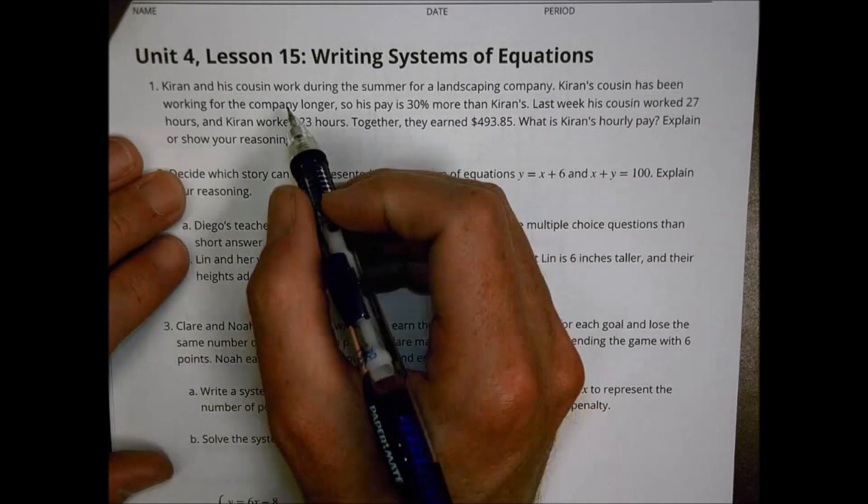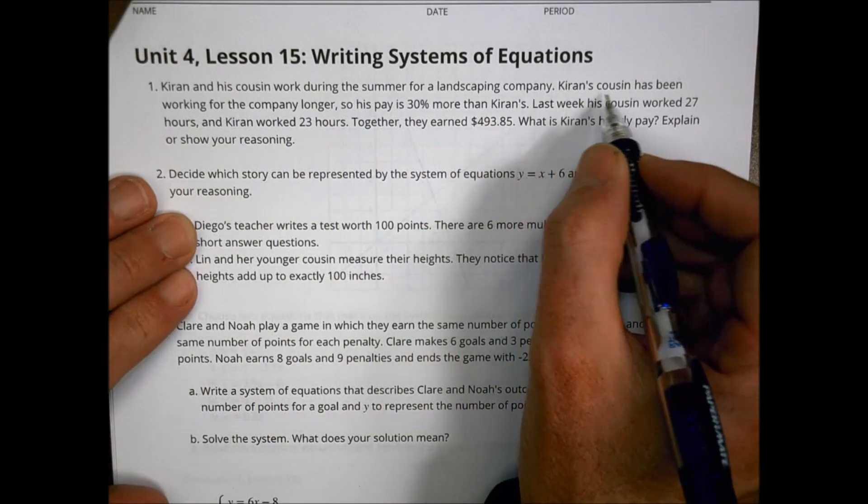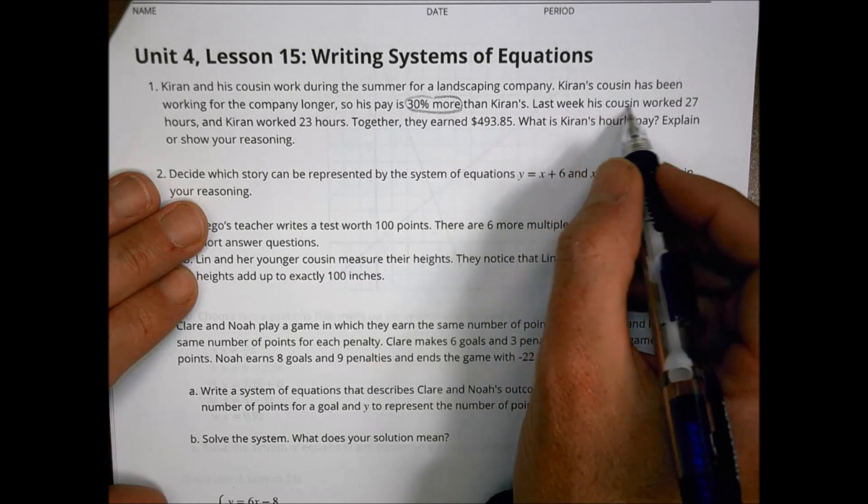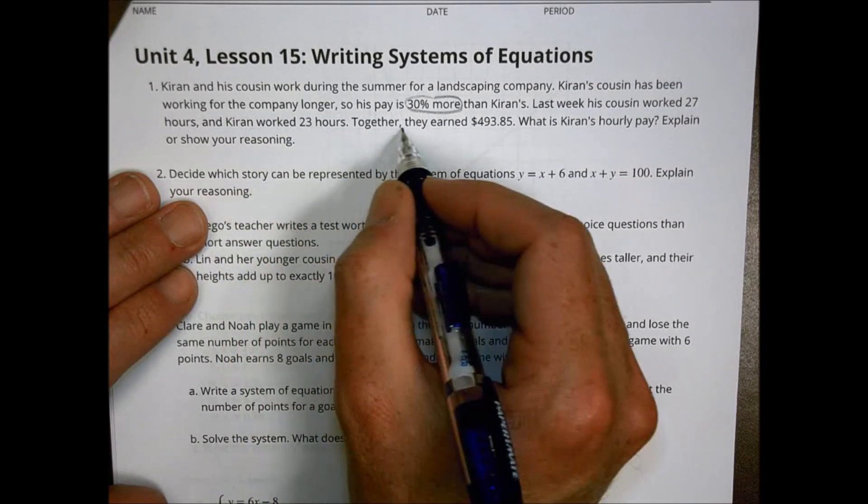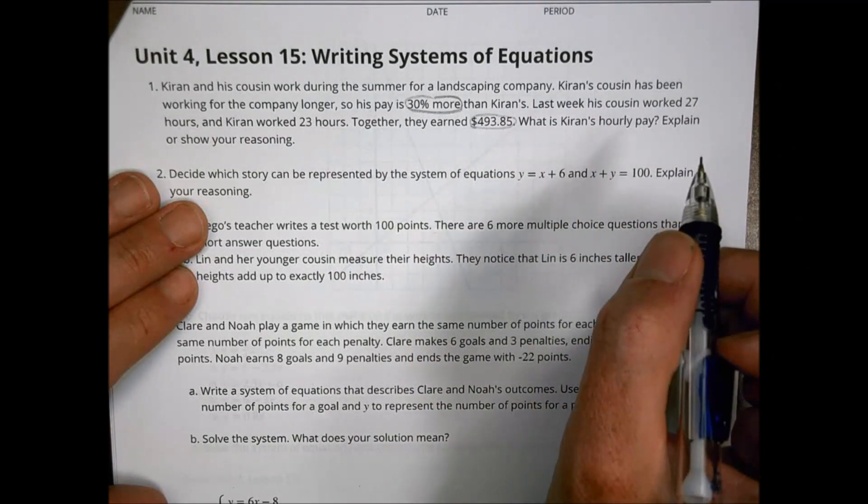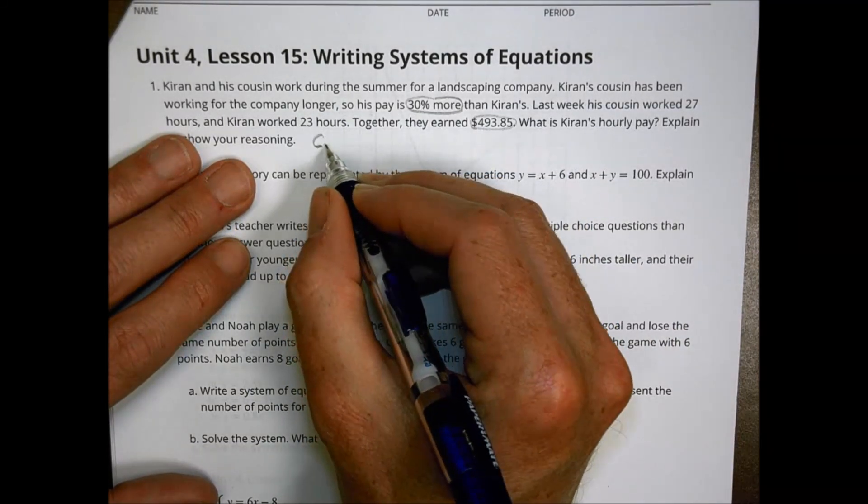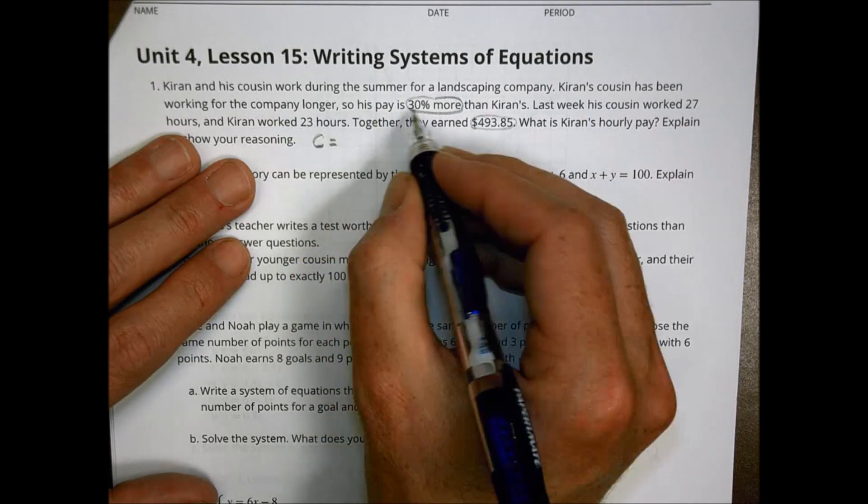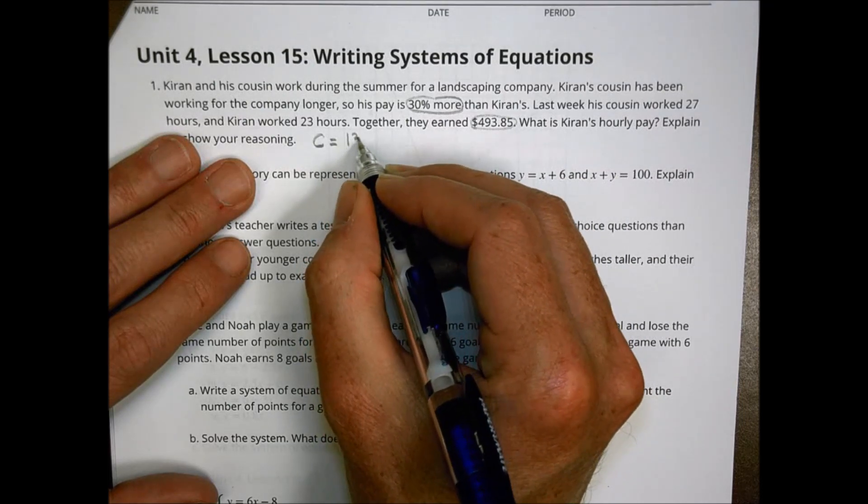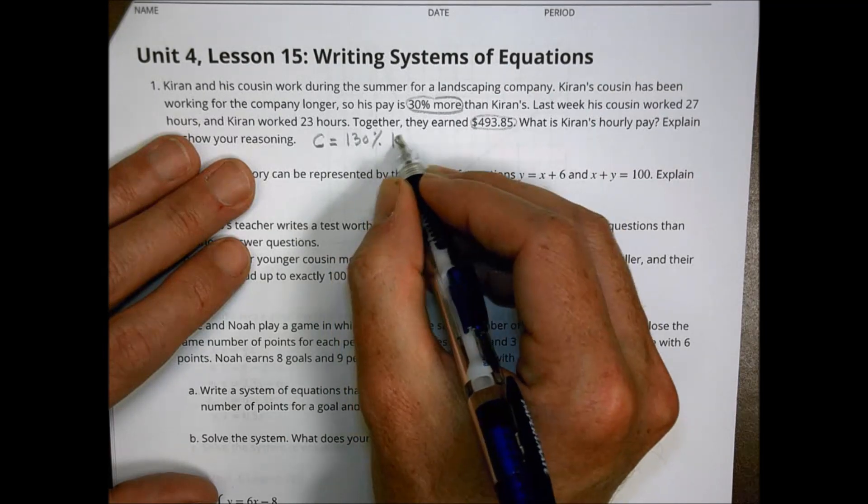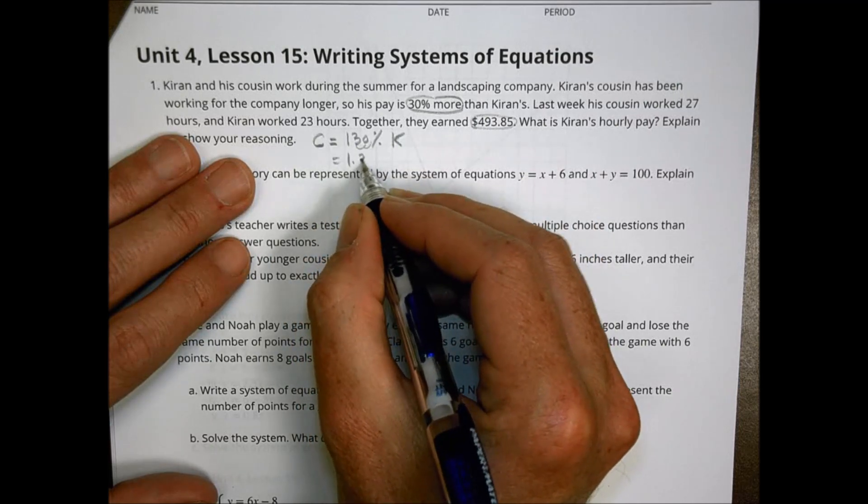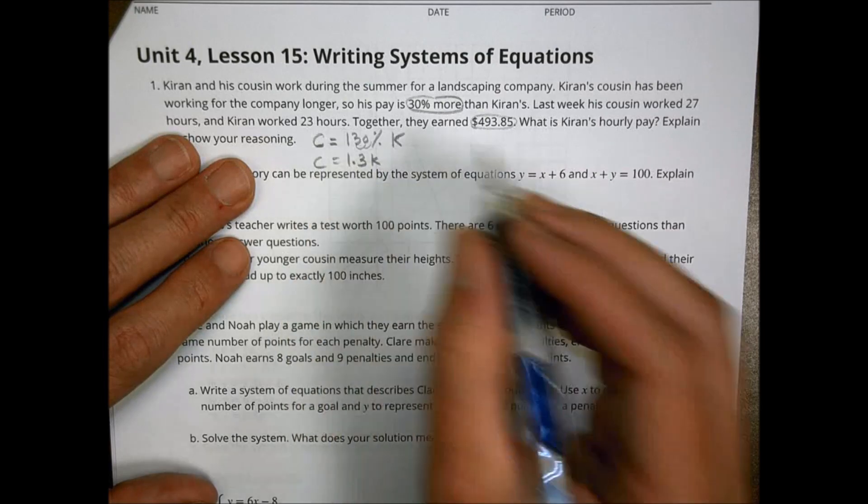Here we go. Kieran and his cousin worked in the summer for a landscaping company. Kieran's cousin has been working for the company longer, so his pay is 30% more than Kieran's. Last week his cousin worked 27 hours and Kieran worked 23 hours. Together they earned $493.85. What is the hourly pay? So let's take a look here. The cousin, we'll call him C for cousin. He gets 30% more. So remember this from before, 30% more means he makes 130% of whatever Kieran makes. So I can turn this into a decimal and call this equal to 1.3 K.